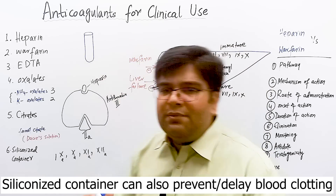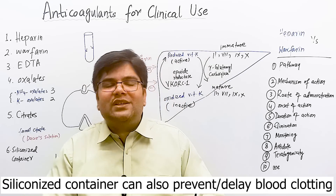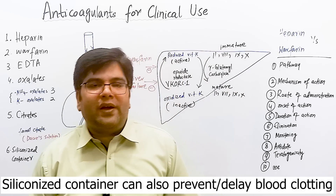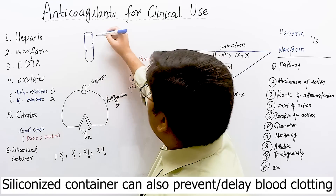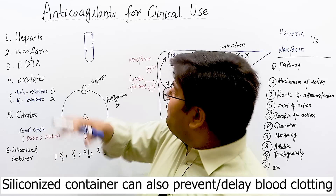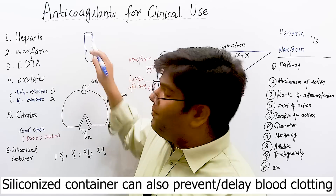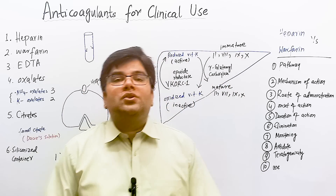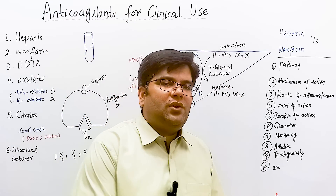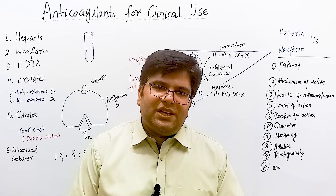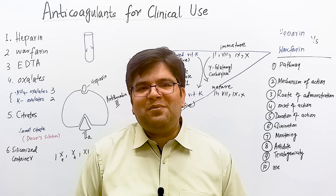A siliconized container can also prevent coagulation for about one hour or more. When blood is placed in a plain glass container, the rough inner surface causes contact activation of platelets and clotting factor 12, leading to coagulation within six minutes. If the inner surface is siliconized, it becomes smooth, preventing contact activation of platelets and clotting factor 12, and clotting can be prevented for one hour or more. In today's session we studied clinical anticoagulants — some used only in vivo, some only in vitro, and some both. In the next session we will study conditions in which excessive bleeding may occur.